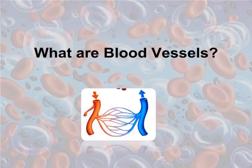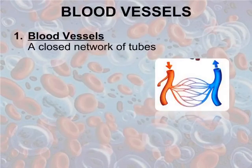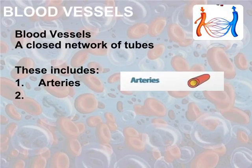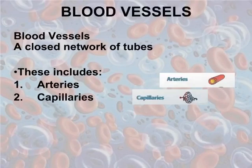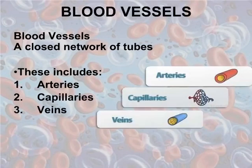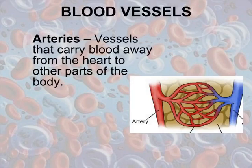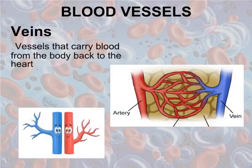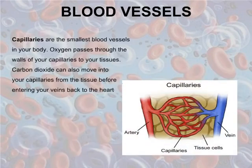What are blood vessels? Blood vessels are a closed network of tubes. These include arteries, capillaries, and veins. Vessels that carry blood away from the heart to other parts of the body are called arteries. Vessels that carry blood from the body back to the heart are called veins. Capillaries are the smallest blood vessels in your body. Oxygen passes through the walls of your capillaries to your tissues.